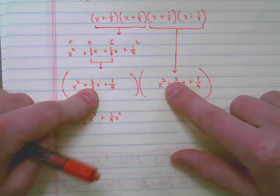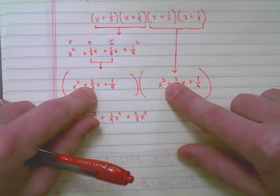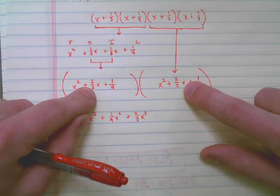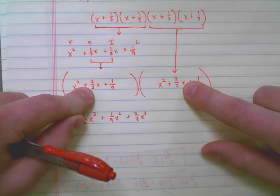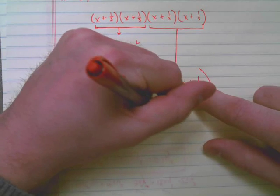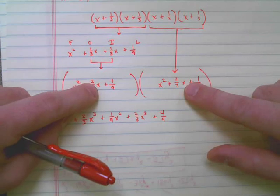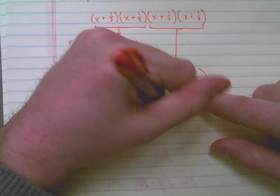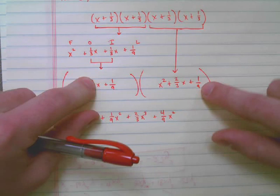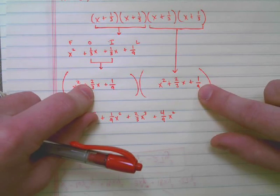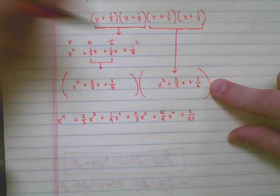Now I need to do the same thing with the two-thirds x. Two-thirds x times x squared gives me two-thirds x cubed. Two-thirds x times two-thirds x gives me two-thirds times two-thirds would be, and if you do this in your calculator, two-thirds times two-thirds, four-ninths. Two times two is four. Three times three is nine. And then I have x times x, which gives me x squared. Now I have the two-thirds x times one-ninth. That's two times one. That's two over twenty-seven. Nine times three is twenty-seven. Two-twenty-sevenths x.